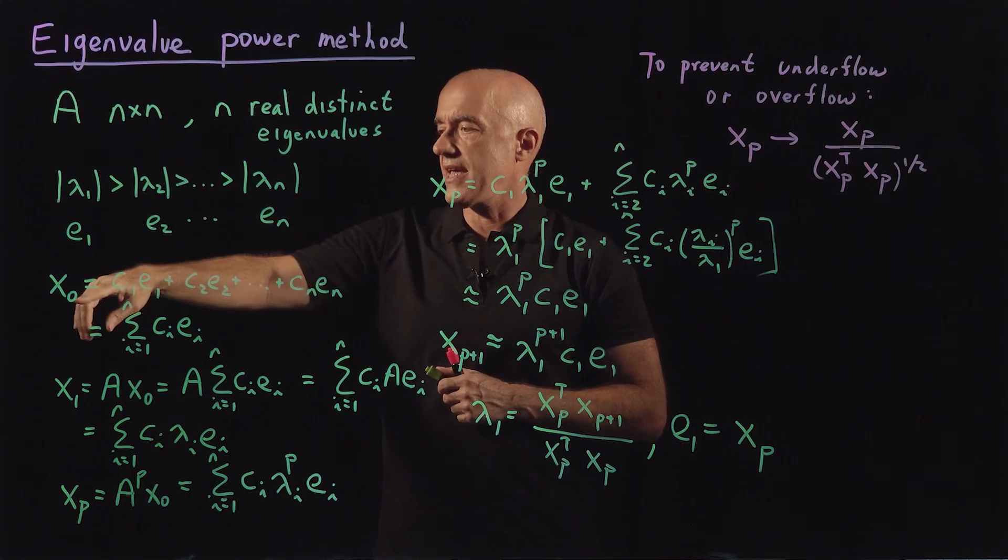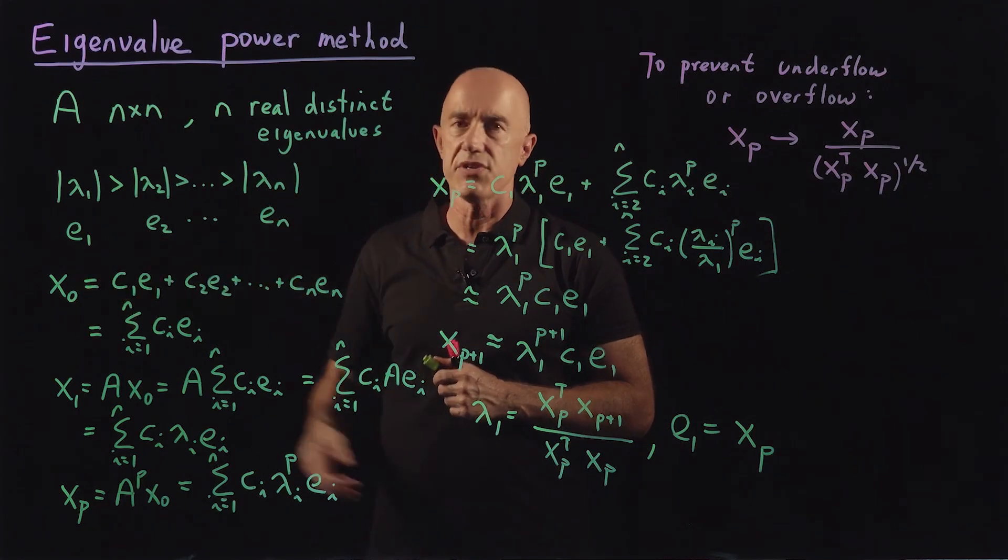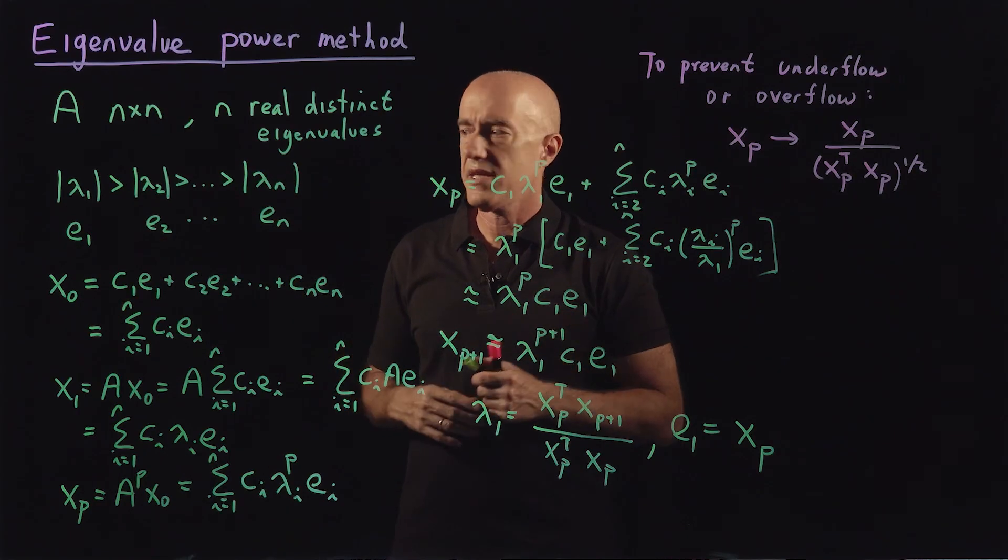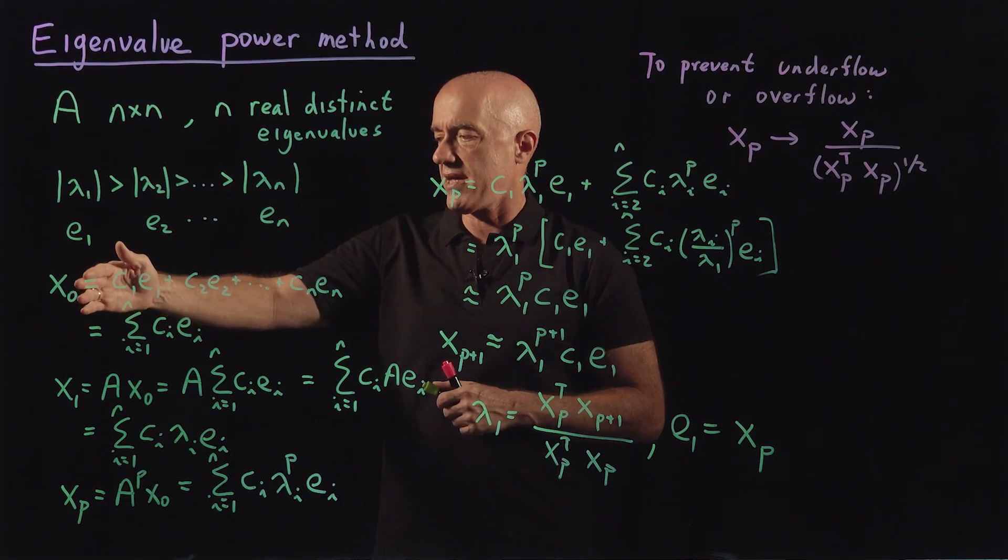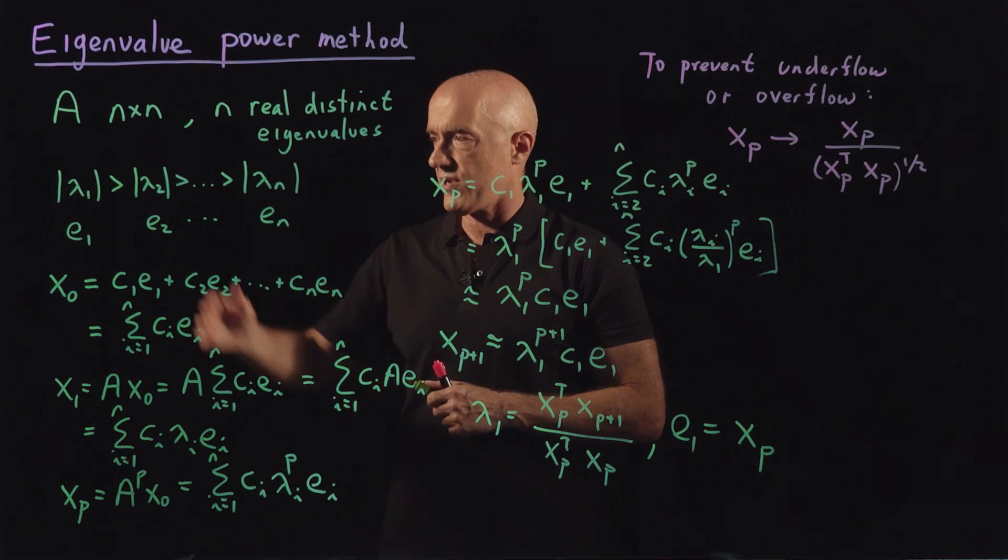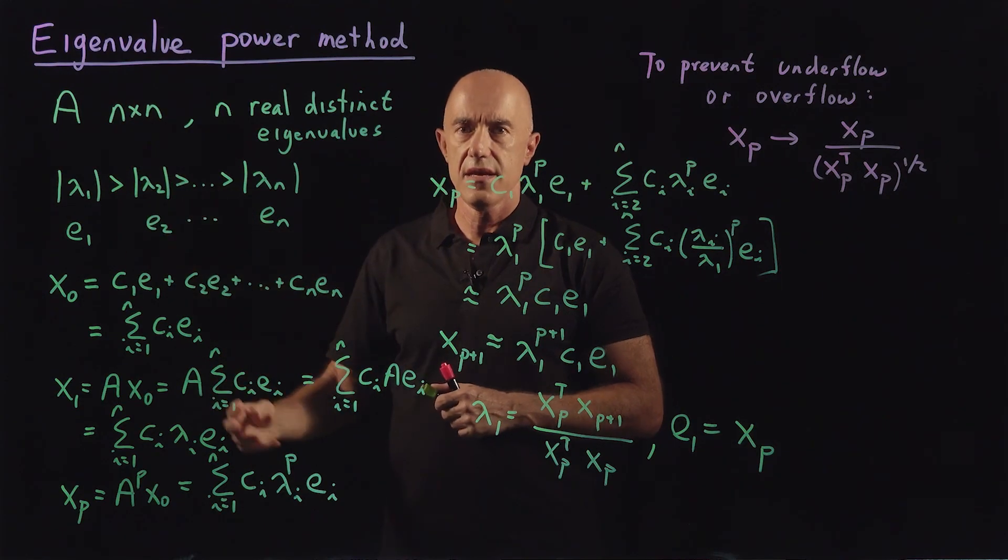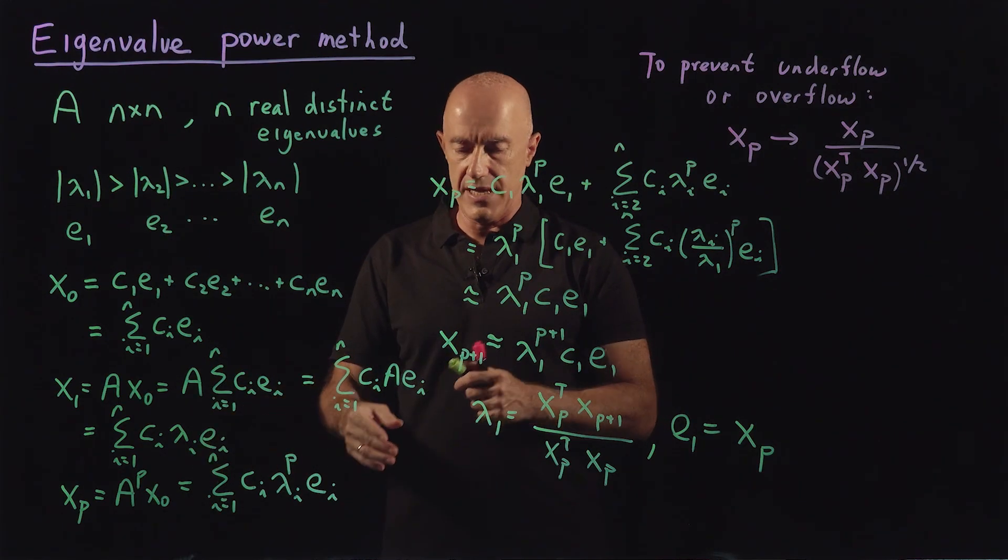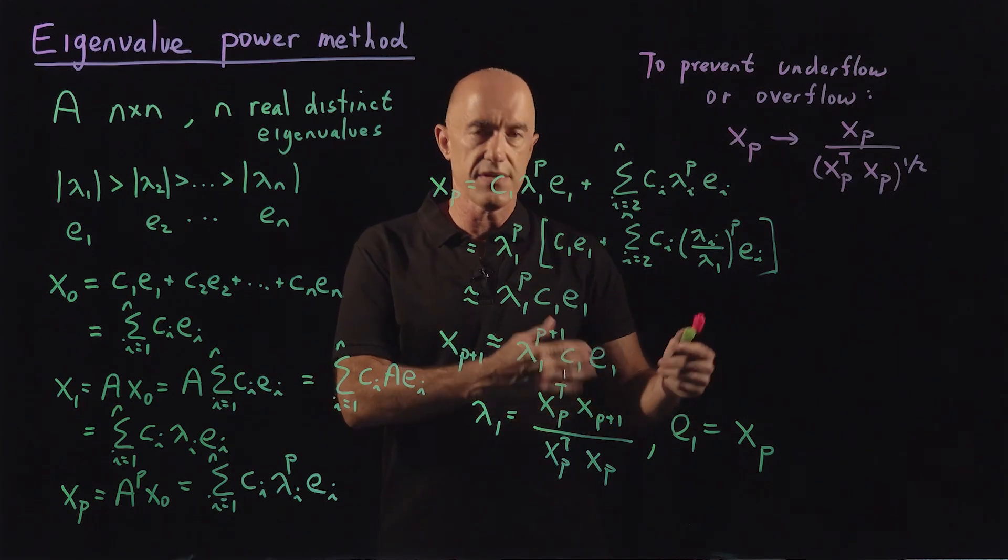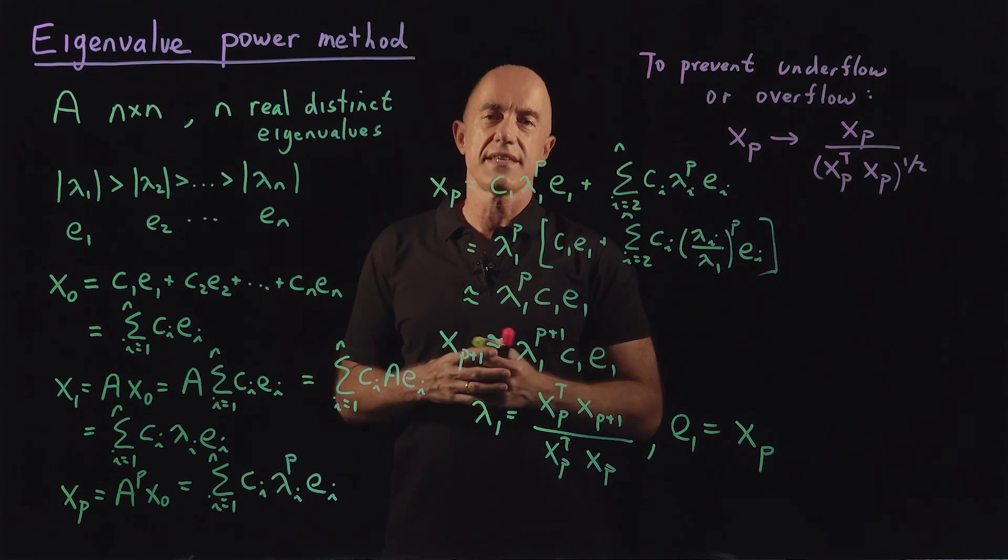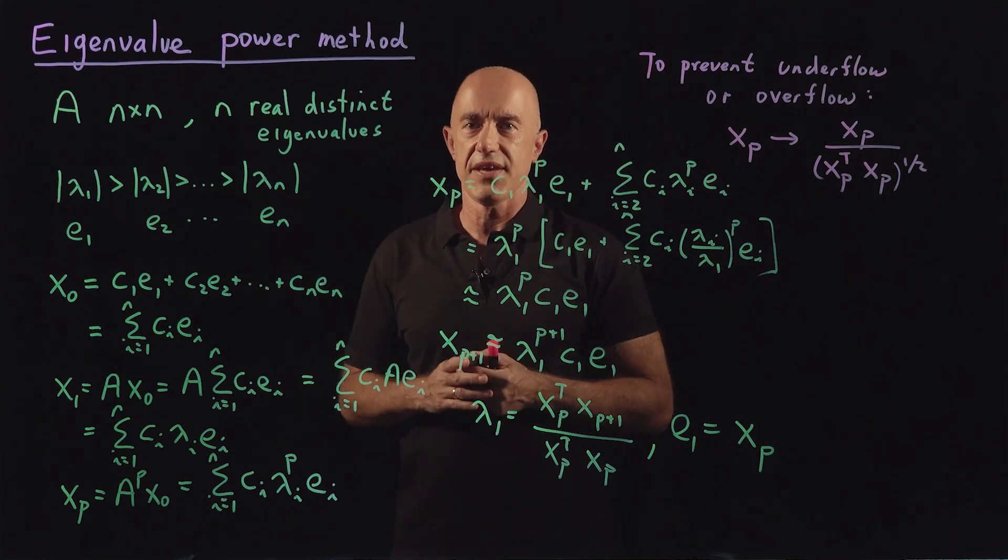All you have to do is start with some initial vector x naught. It could be anything. And then just repeat, multiply it by A, by your matrix. And when you do that, the result is going to give you the dominant eigenvalue and the dominant eigenvector. We can work a simple example in the next video.